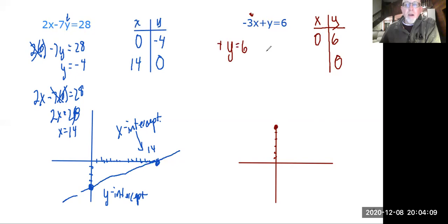And then when I put zero in for y, I get negative three x equals six. So x equals negative two. That's going to be back here at x equals negative two, y equals zero. That's the x intercept. X intercept where it crosses the x-axis, y intercept where it crosses the y-axis and draw your line. I hope that helps graphing from standard form.